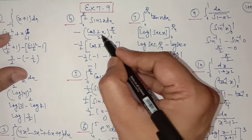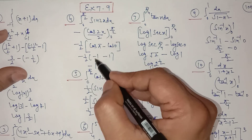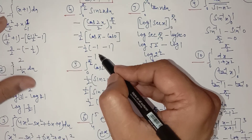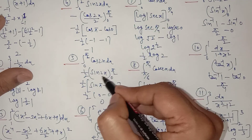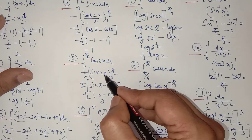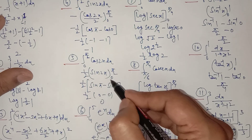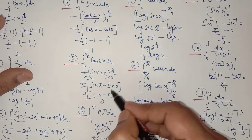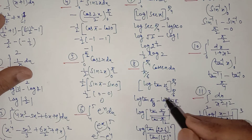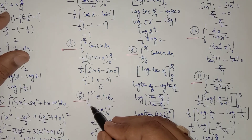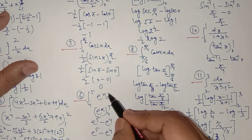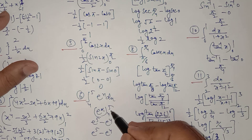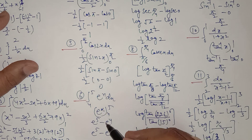For the integral from 0 to π/2 of sin 2x with respect to x, the antiderivative is −cos 2x / 2. Evaluating: −1/2 × [cos π − cos 0] = −1/2 × [−1 − 1] = −1/2 × (−2) = 1. For the integral from 0 to π/2 of cos 2x, the antiderivative is sin 2x / 2. Evaluating: 1/2 × [sin π − sin 0] = 1/2 × [0 − 0] = 0.